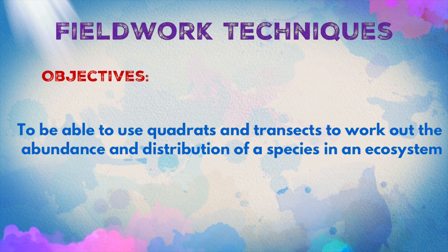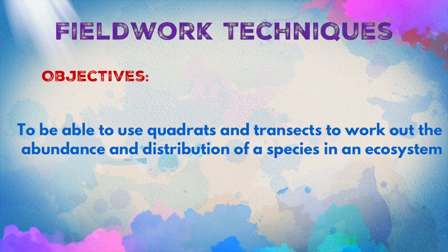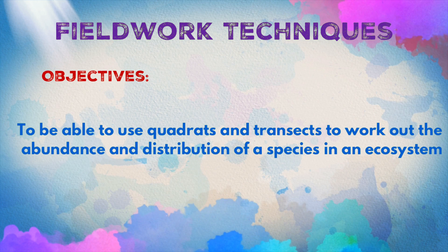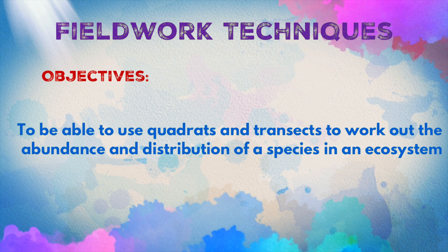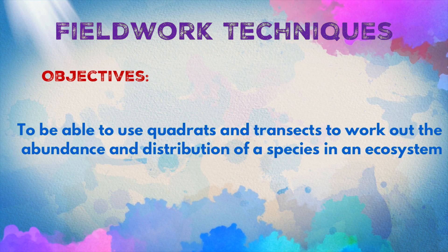Welcome to this episode from the Science Revision channel. Today we're looking at fieldwork techniques — being able to use quadrats and transects to work out the abundance, that's how many, and distribution, which is how spread out they are, of a species in an ecosystem.